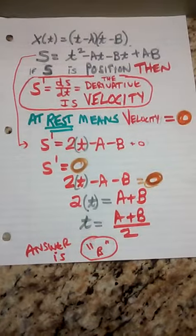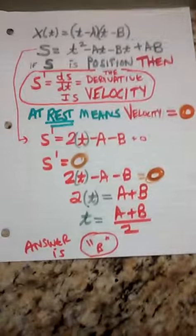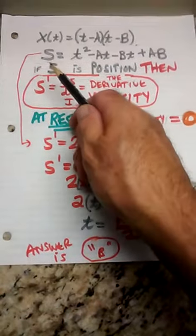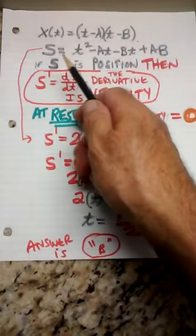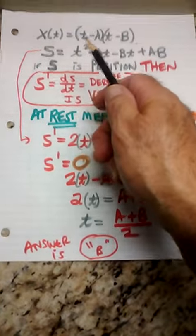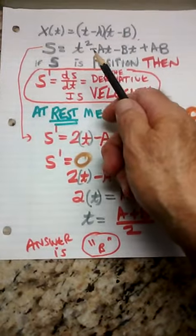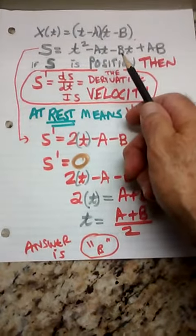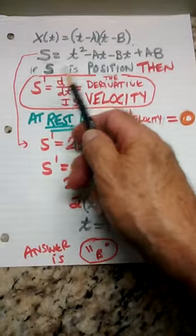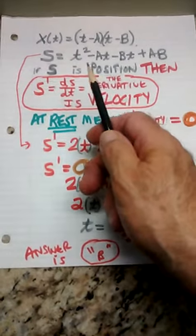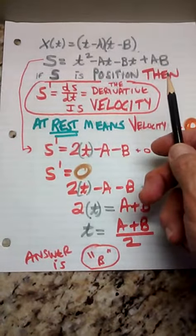x of t is t minus a times t minus b. That would be s, usually written as x of t, that's the position of the object. So I'm going to FOIL this: t squared minus at minus bt plus ab. That's the position.